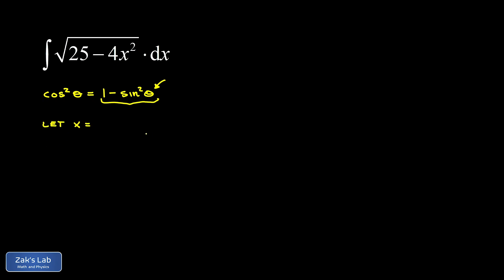We need to choose an x so that when we square it, it cancels out the 4 and gives us a factor of 25 so we can pull that out of the square root and get a 1 for our constant. So it just takes a little bit of guess and check, but what I'm going to do is let x be 5 over 2 times the sine of theta.